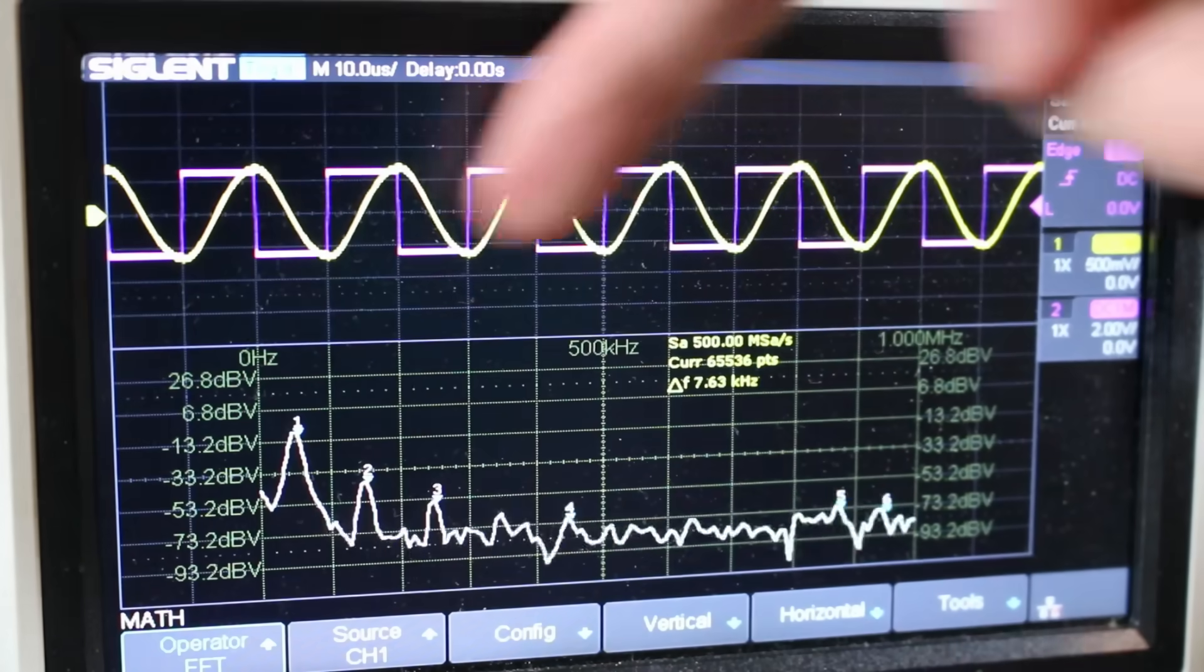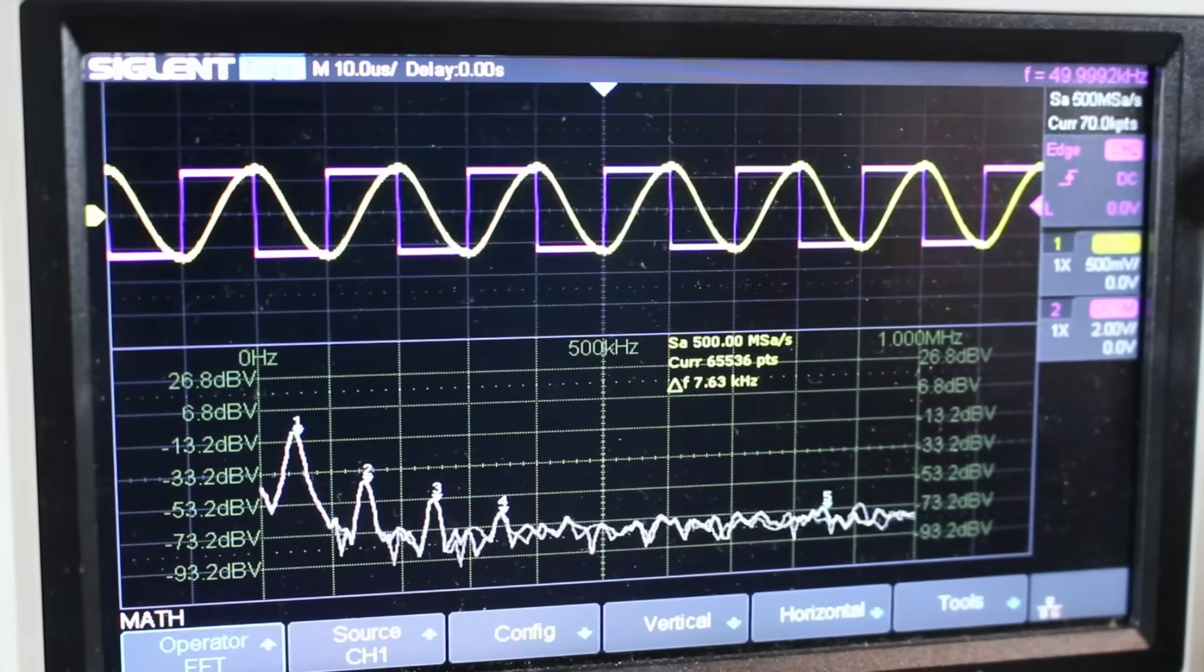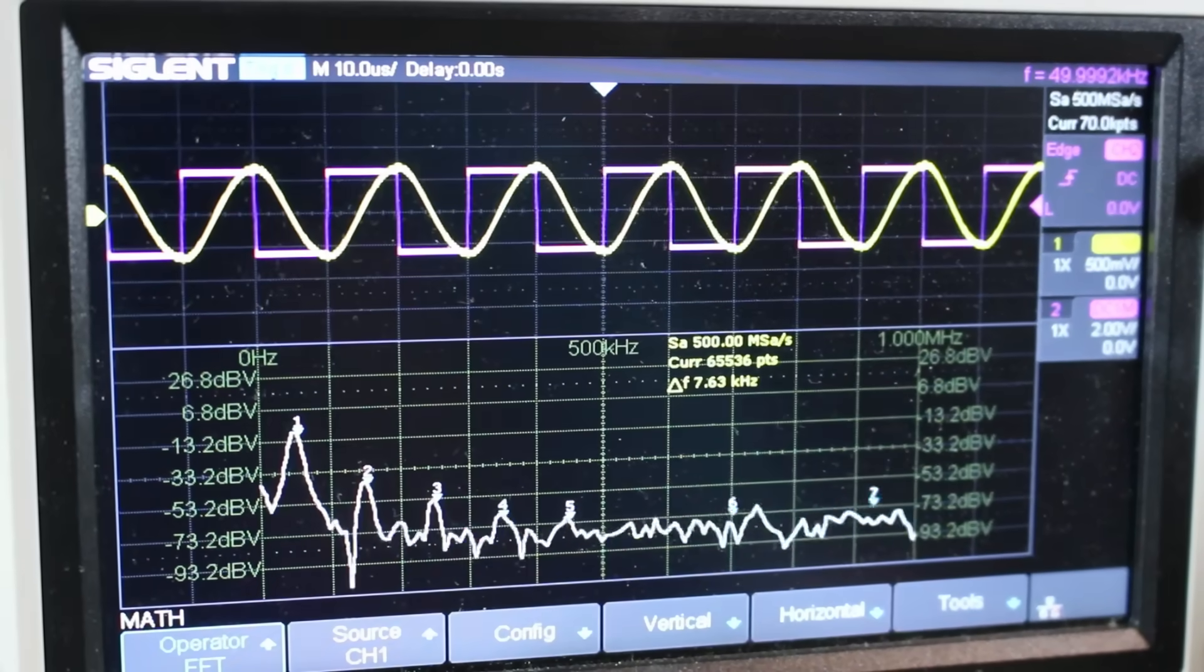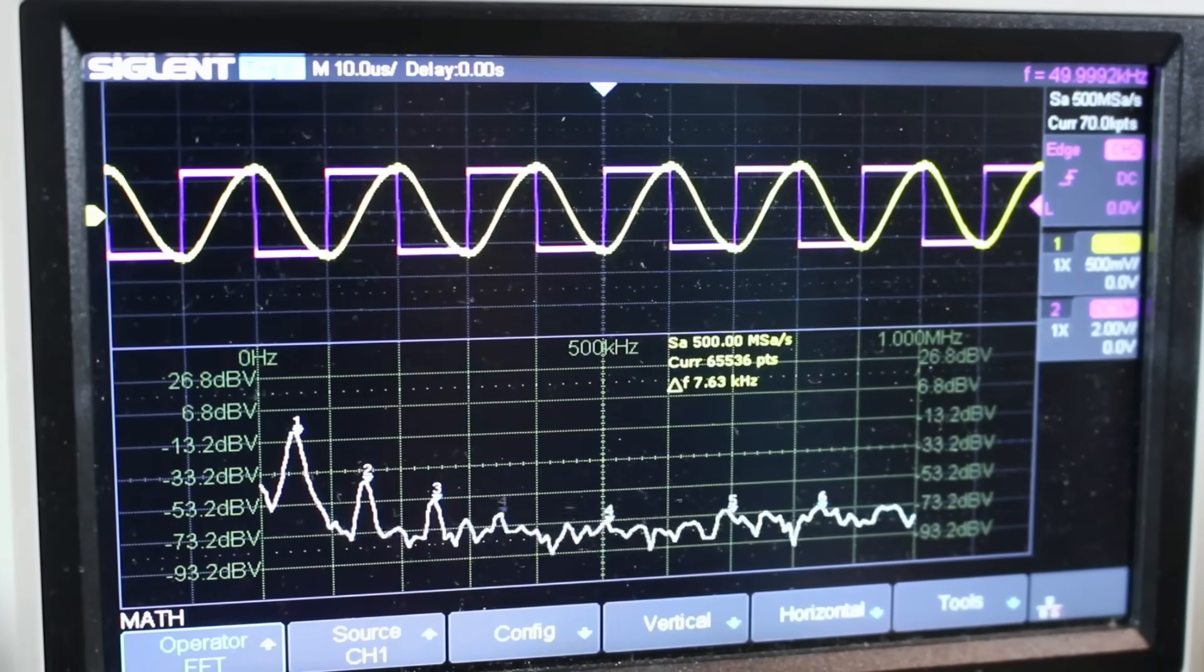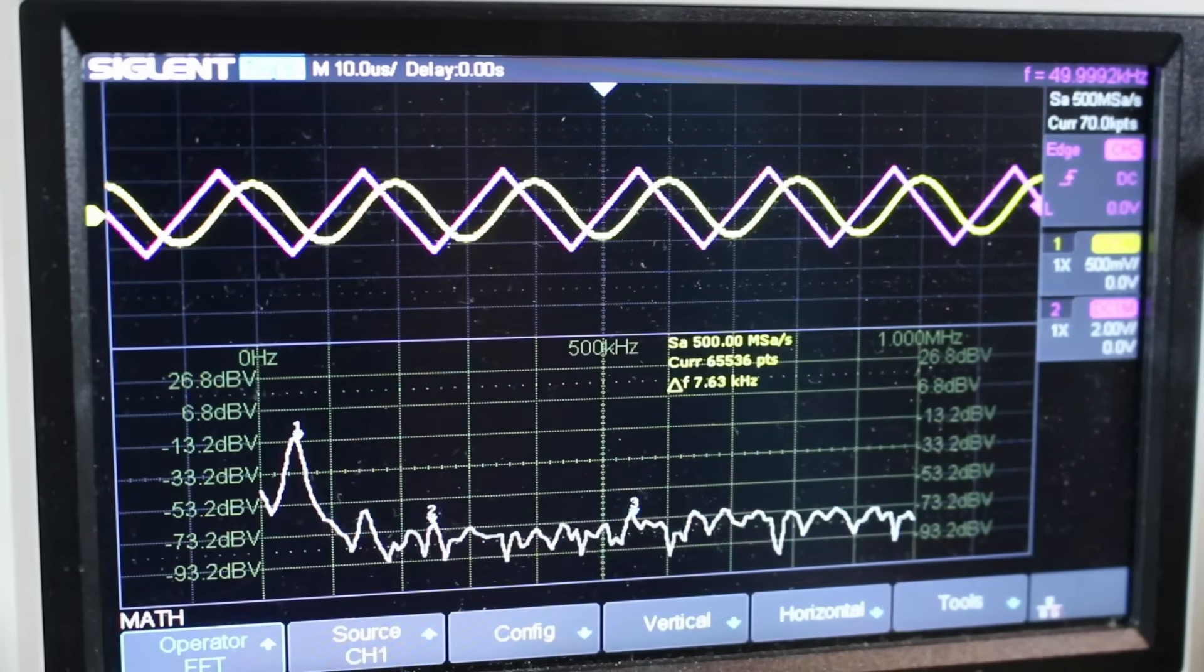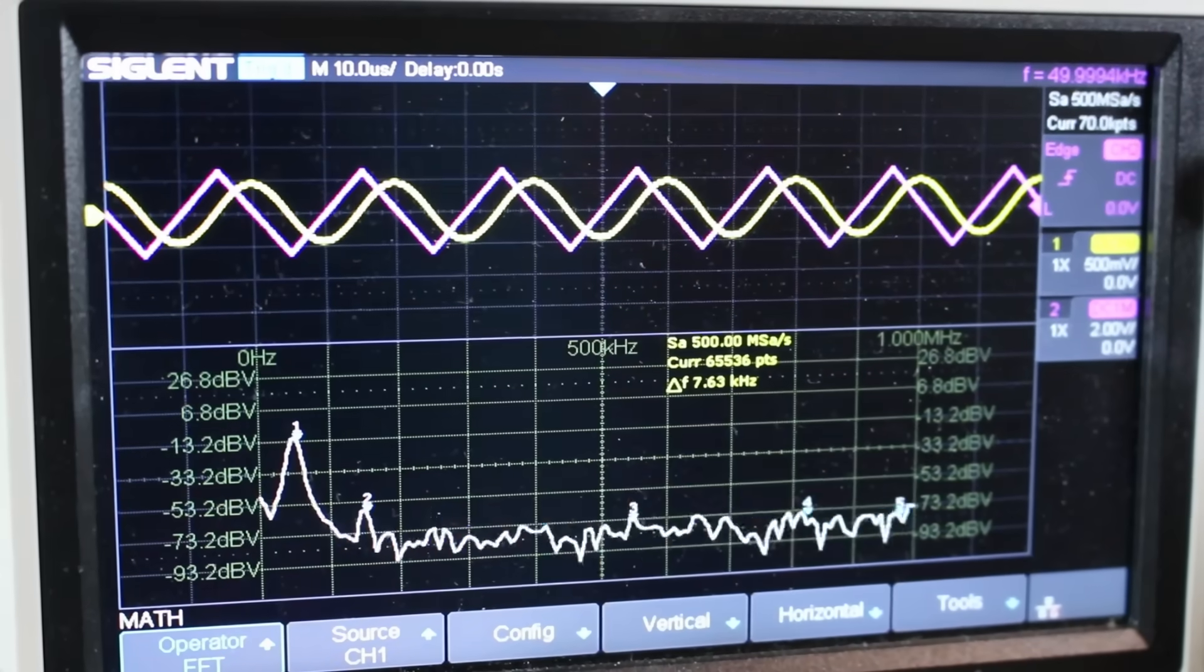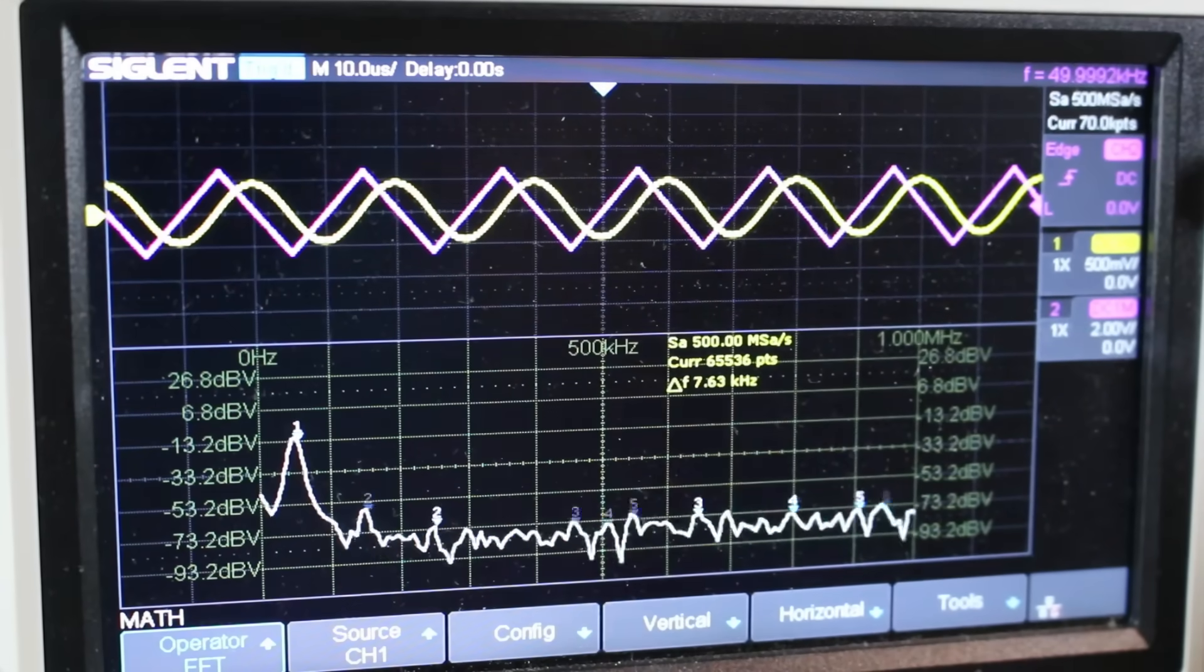If you wanted to improve things even more, you could add another filter or two to better select the filtered frequency. Unfortunately, this filtering method isn't the greatest for a selectable frequency, since you'd have to dynamically adjust the filter based on the input frequency.